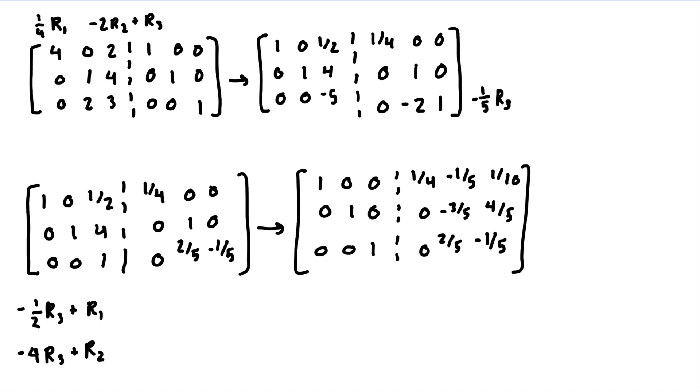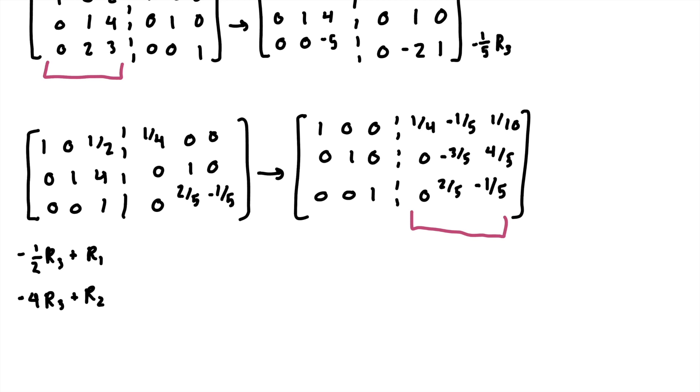So the matrix on the right side is actually the inverse of the original matrix. I'm going to quickly write that at the bottom.